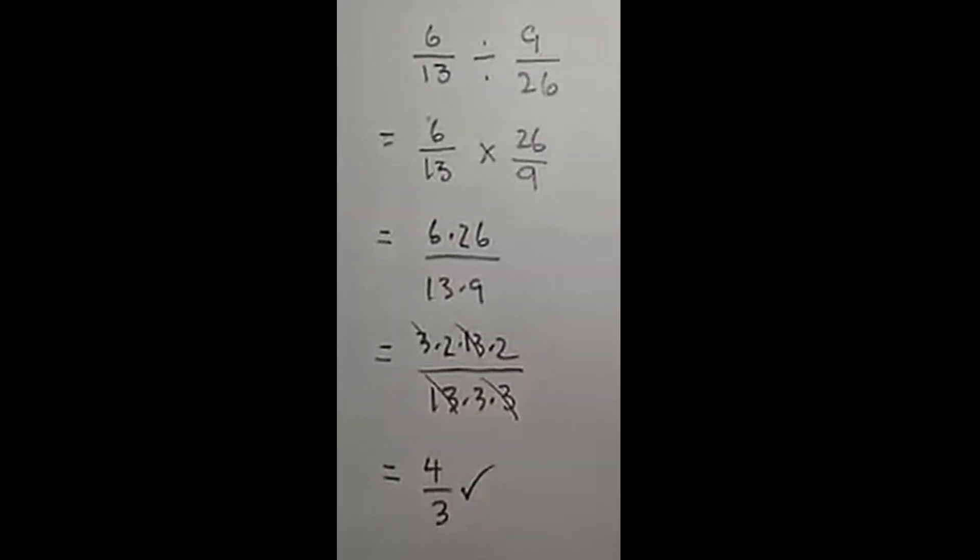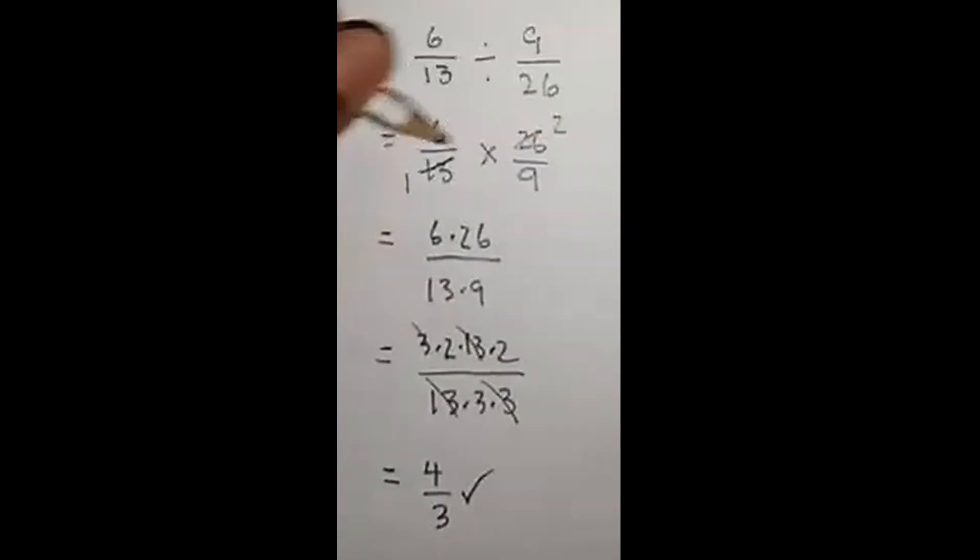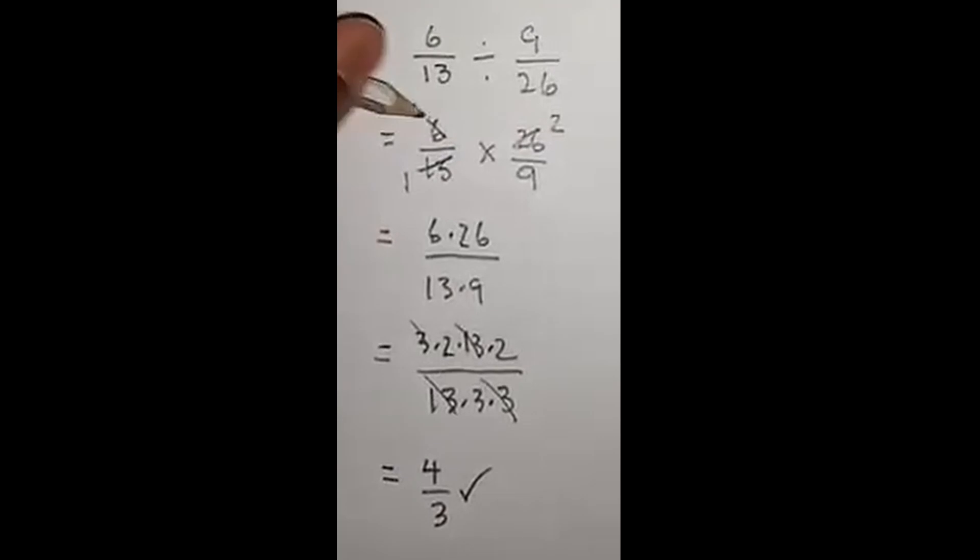Of course you could have done it here. 13 goes into 13 one time, into 26 two times. 3 goes into 6 two times, into 9 three times. 4 over 3, much faster if you can do it this way. Otherwise, go through this.